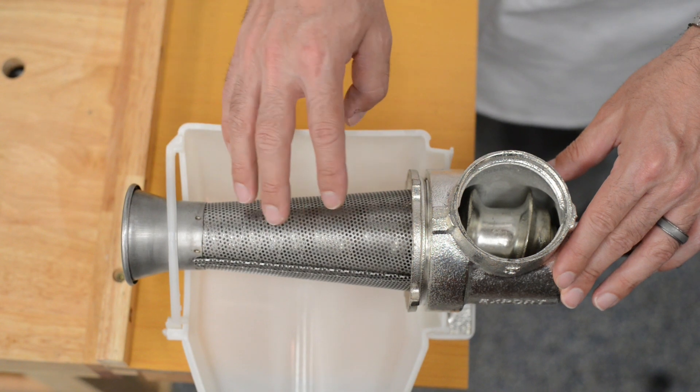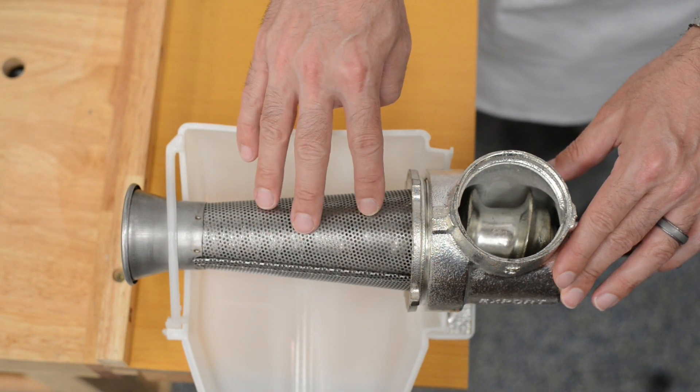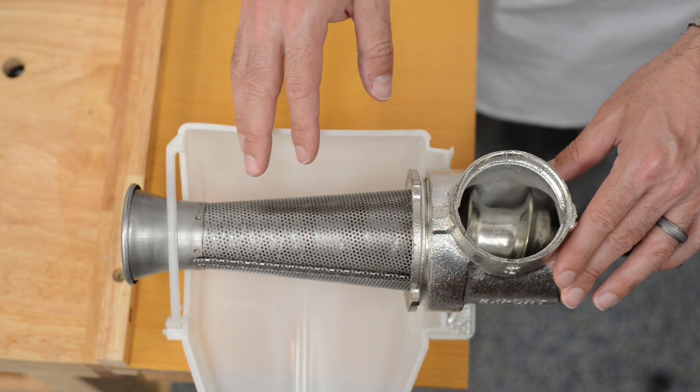You can use old tomatoes or wet bread or something of that nature for your first run in order to throw it away.